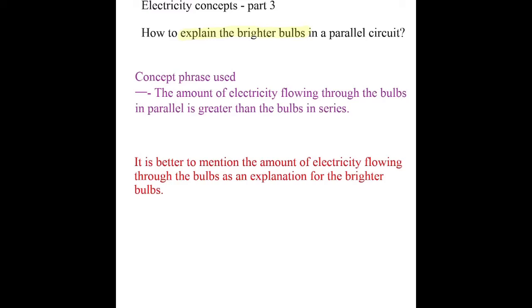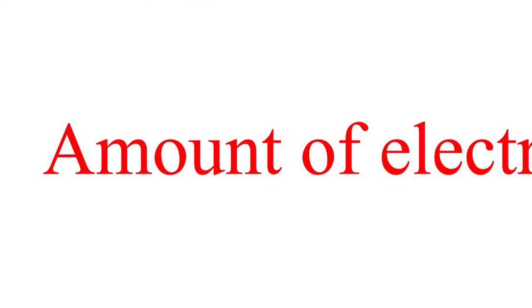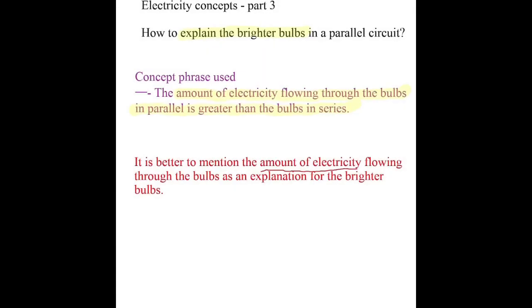So the commonly used phrase would be: the amount of electricity flowing through the bulbs in parallel is greater than the bulbs in series. The amount of electricity—that is the concept here.